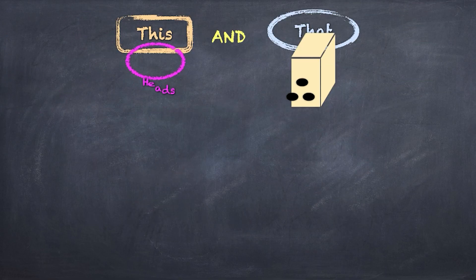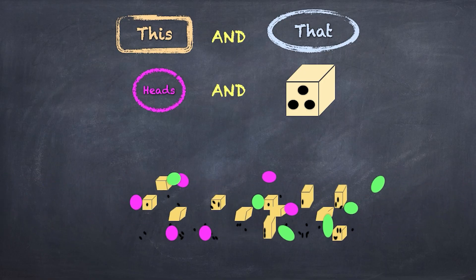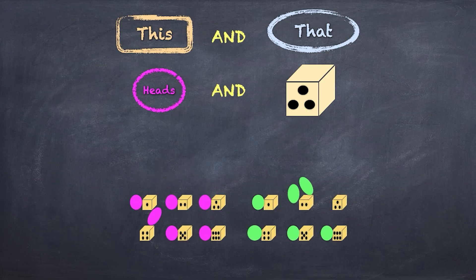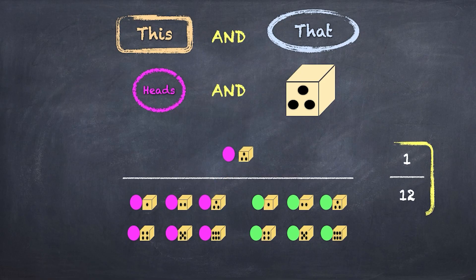We'll start with the probability of spinning a coin which gives us heads, and at the same time we roll a dice and it shows a three. What are the chances of that happening? Here we've got heads in pink and tails in green. You can see that there are 12 possible combinations of heads and tails and dice roll outcomes that could happen. Of the 12 equally likely possibilities, only one combination gives us both heads and three.